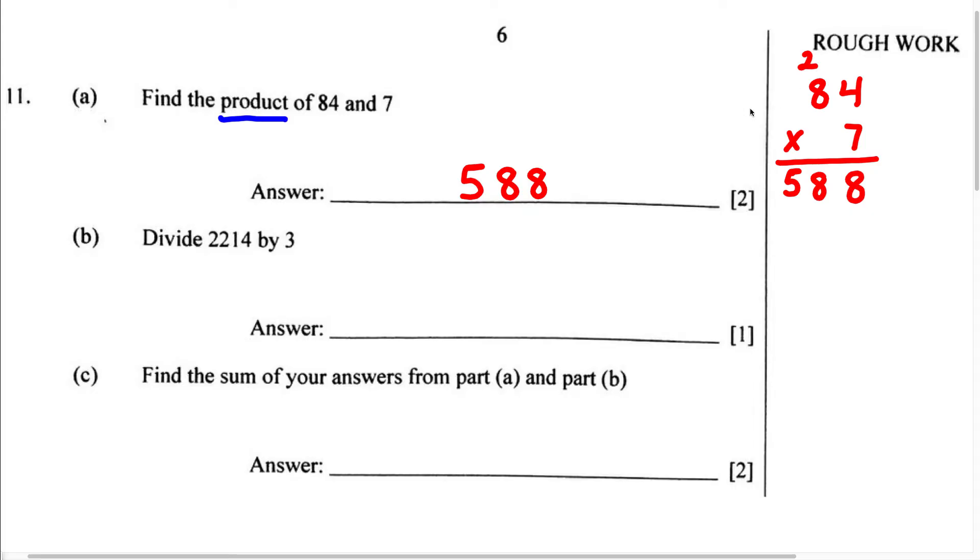Now for part B, it says divide 2,214 by 3. So what are we doing? We're going to be dividing. So this word right here tells us everything we need to know to solve this problem. Now how should we set this up?